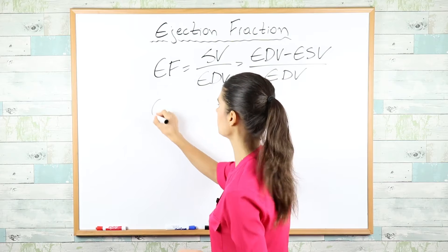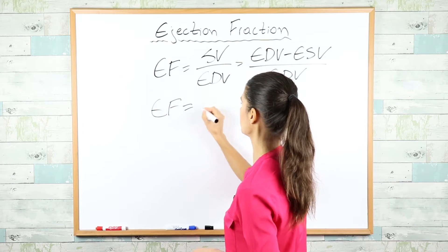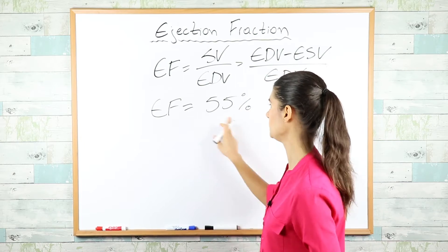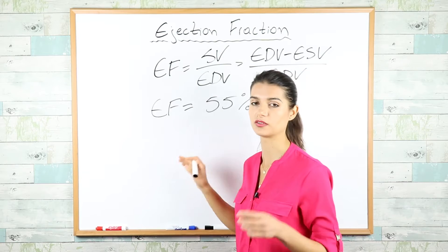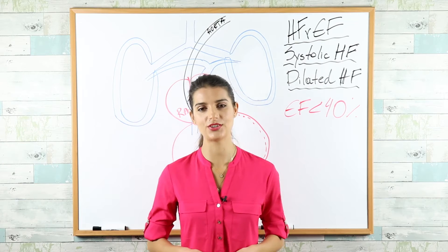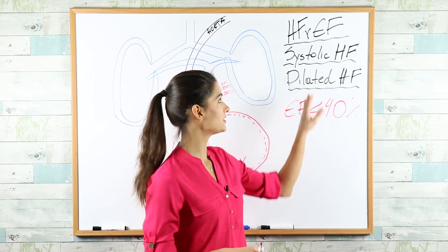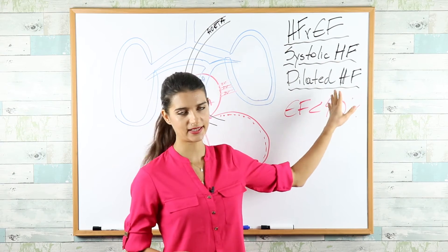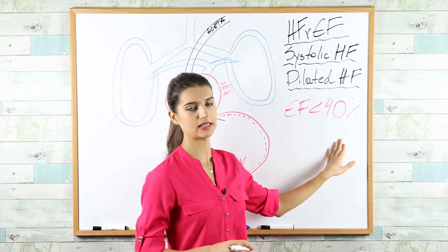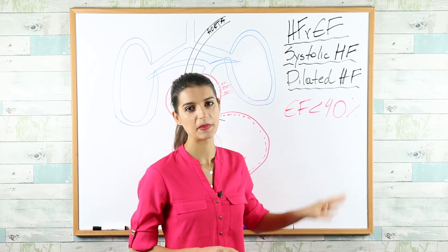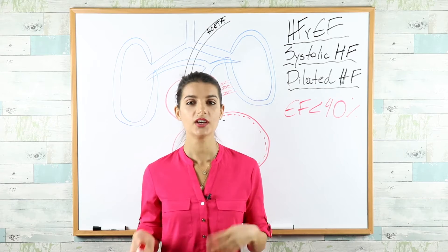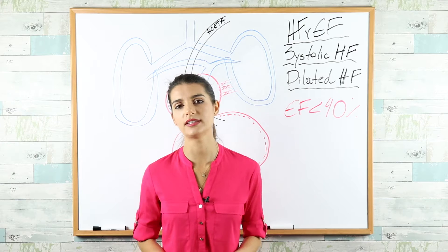Normal ejection fraction is 55% — remember this number. Heart failure with reduced ejection fraction, also called systolic or dilated heart failure, has an ejection fraction less than 40%. The most common causes include hypertension in late stages, coronary artery disease, and valvular defects.